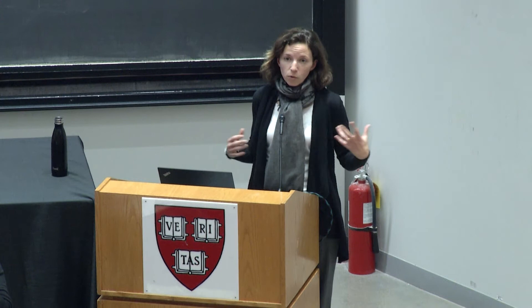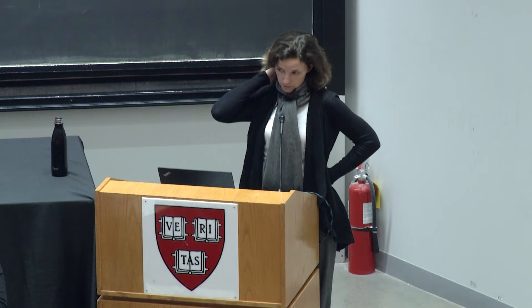Here's my example: ranked choice voting and instant runoff voting, RCV and IRV. These elections are much more challenging to describe and to display. A ranked choice vote is when I get to go to the ballot box and list candidates that I like in order from top choice to bottom choice. This is not approval voting — this is literally a ranked list. There can be subtleties, like maybe you can rank at most five people, or you have to rank the entire list, or you can have a partial ballot. But the idea is a ranked list. That's the way I'm casting my vote. Then there's a second stage where the votes actually get tallied, and there are multiple ways to do that. The one I want to focus on is instant runoff.